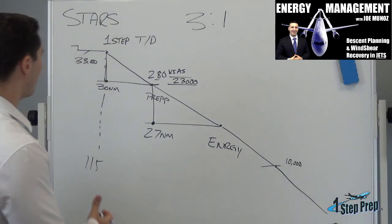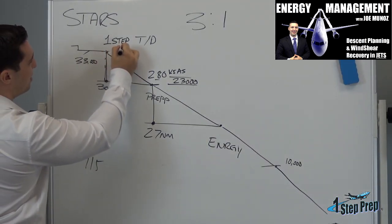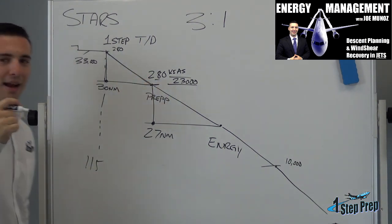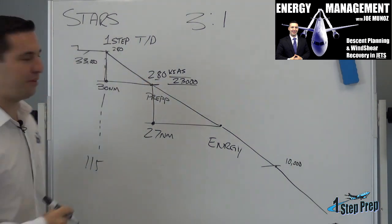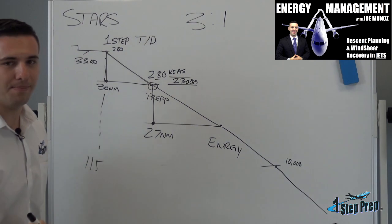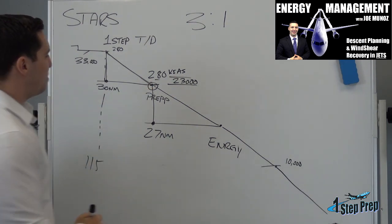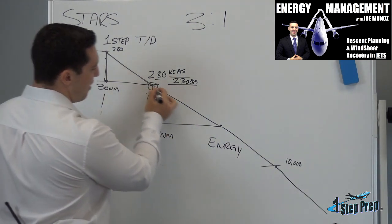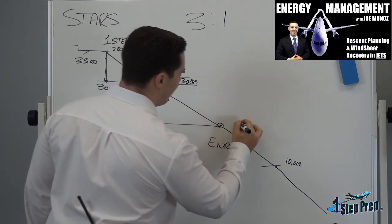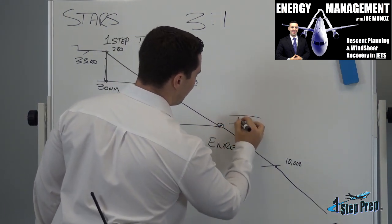I'm going to start my descent from one step way up here. I'm just going to set 280 from the top, all the way down, and I will 100% now arrive at this point right on speed. Once we hit 280 and 23,000, the aircraft has to descend and cross at an altitude of 12,000.